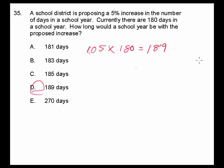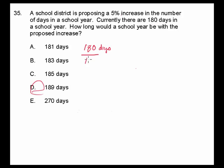Being familiar with writing your percentages and understanding percentages, you can solve these problems very quickly and easily. Now I'm going to go through one more way of solving this problem, and that is using proportions — though I'm not suggesting you use proportions on a problem like this. We know that 180 days is 100%. So we want to increase this by 5%, setting it up as a proportion with 105%.